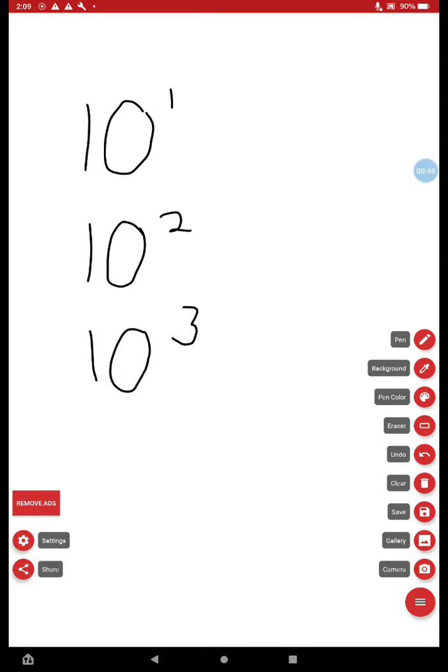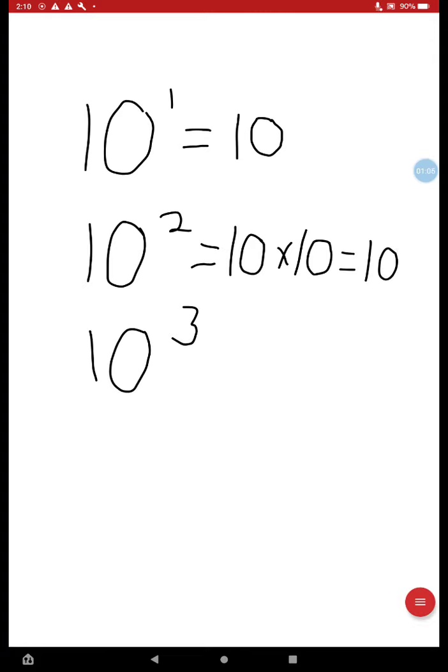These represent repeated multiplication with 10. 10 to the first means 10. 10 to the second means 10 times 10, also known as 100. And 10 to the third equals 10 times 10 times 10, also known as 1,000.